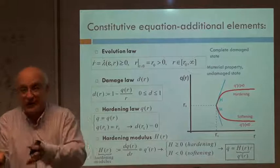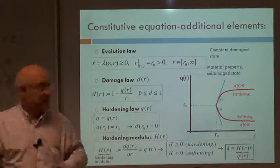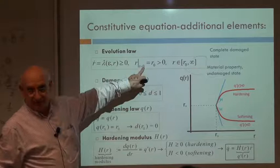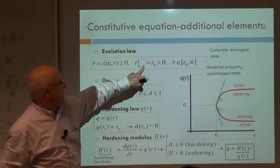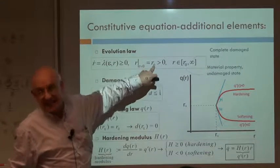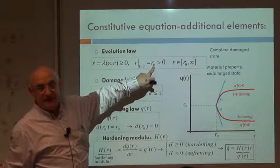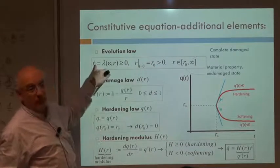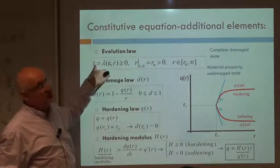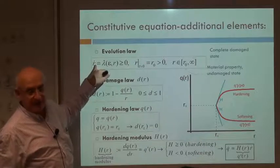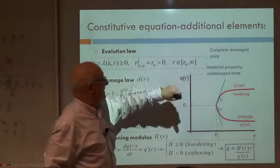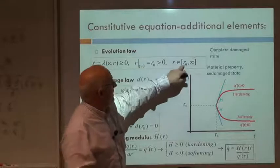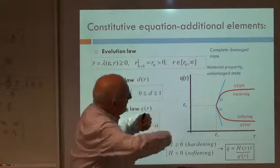This is called the yield stress, or the elastic stress, or whatever. For the virgin material, before any damage, R takes a certain value which is a material property — the value of R for the virgin material — but then it can evolve, so it's no longer a material property after damaging. And the damage can increase from this R₀ to infinity.